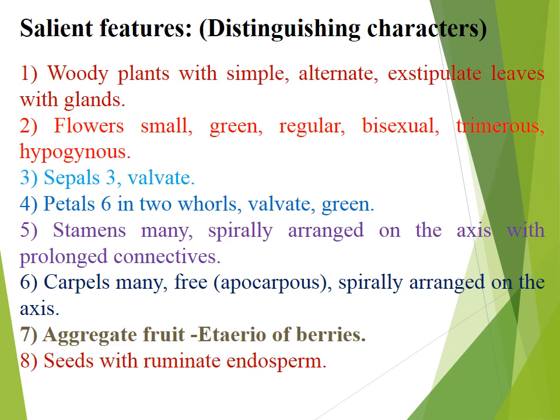Salient features of family Annonaceae: woody plants with simple alternate exstipulate leaves with glands. Flowers small, green, regular, bisexual, trimerous, hypogynous. Sepals three, valvate. Petals six in two whorls, valvate, green. Stamens many, spirally arranged on the axis with prolonged connectives. Carpels many, free, apocarpous, spirally arranged on the axis. Aggregate fruit — etaerio of berries. Seeds with ruminate endosperm.